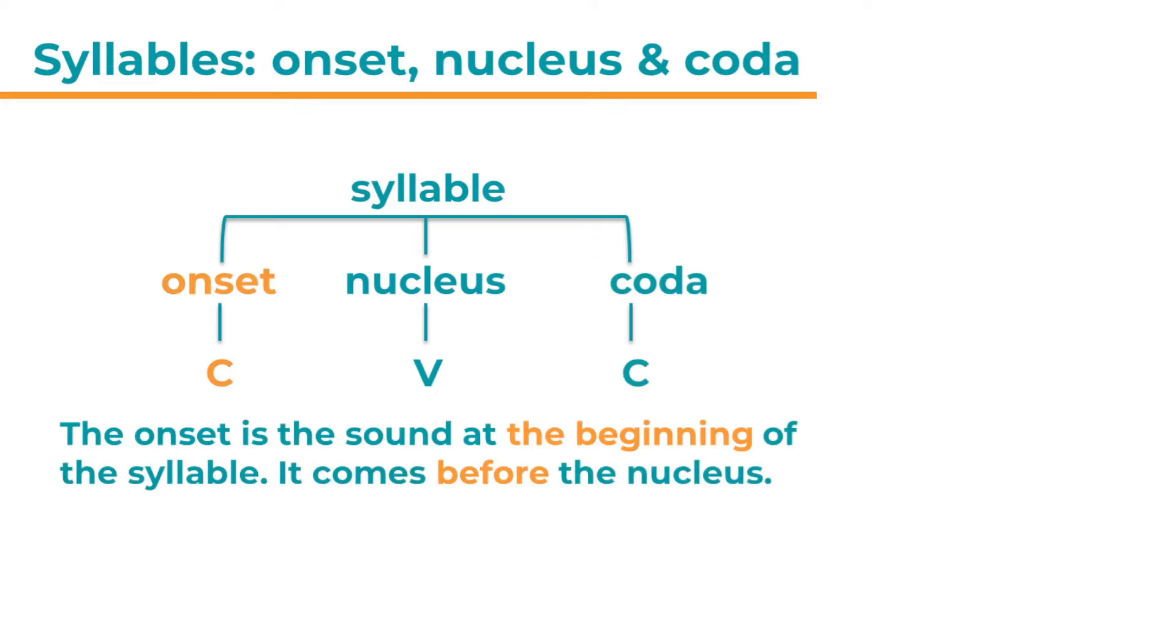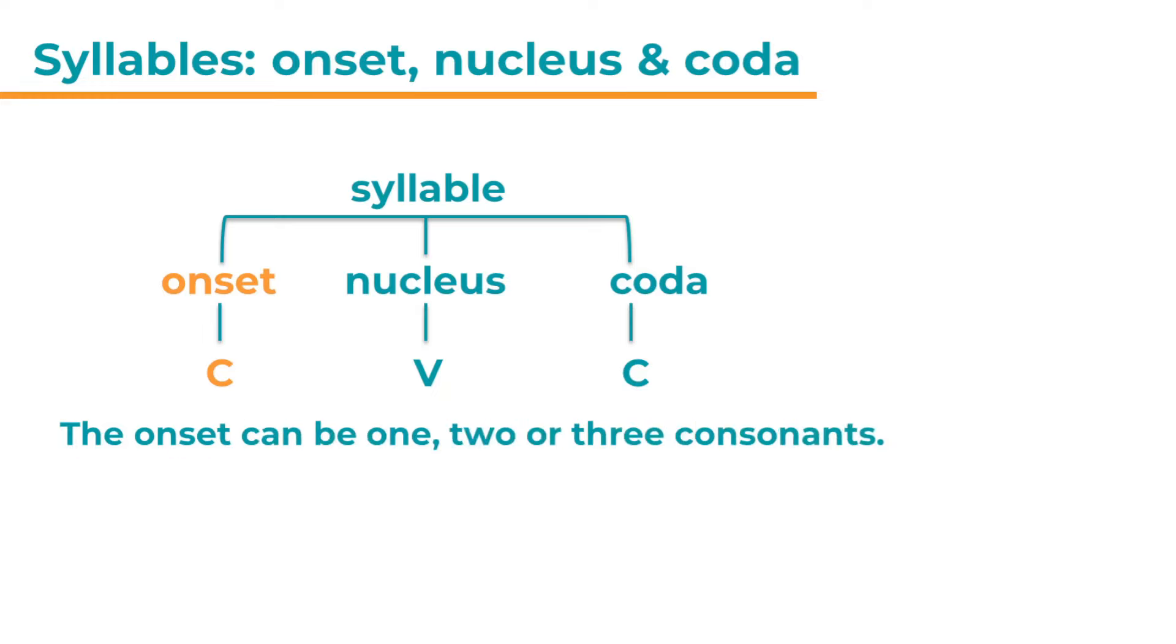It comes before the nucleus. The onset can be one, two or three consonants. So it could be a consonant cluster. For example the b in buy. Here we have one consonant. Or p, l, pl in plan. This is a consonant cluster. Or s, ch, r together, str in strong. Also a consonant cluster.